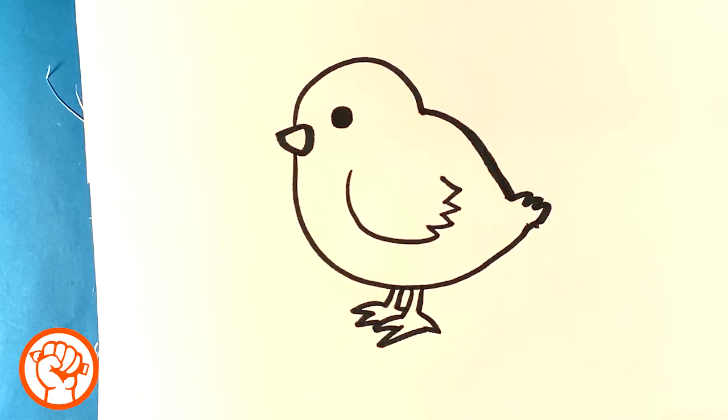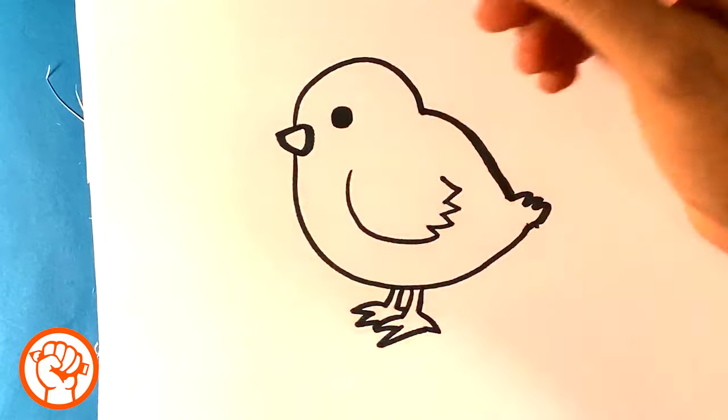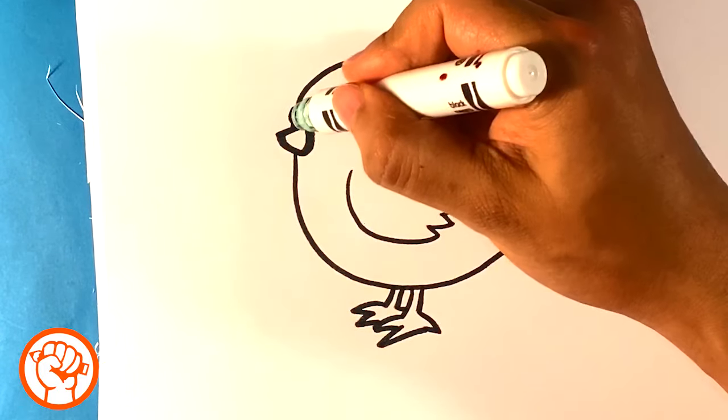Kind of looks like little slices of pizza almost. And that is totally it. You are done. You have a baby chick. So what I'm going to do now is I'm going to kind of throw a thicker contour line around the whole thing.